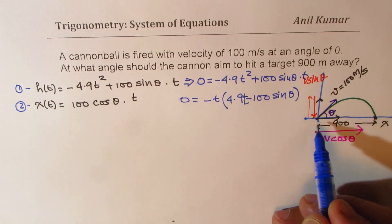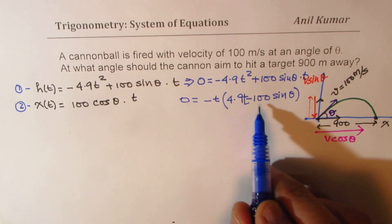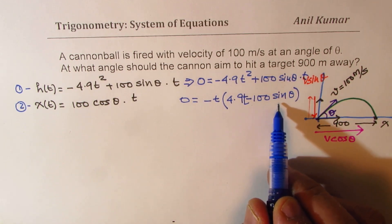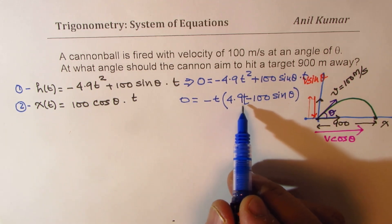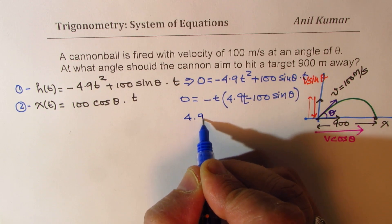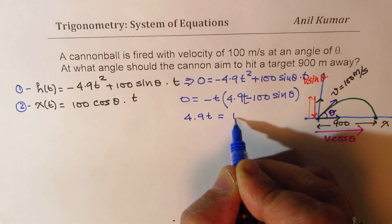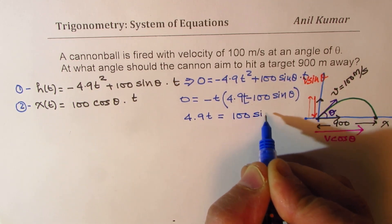Now, we know at t equals to 0, the cannonball was at the ground. So that helps. And the second part gives you the time when it is going to come back and again hit the ground. So this time is what? That means at this time, 4.9 t should be equal to 100 sin theta, right?